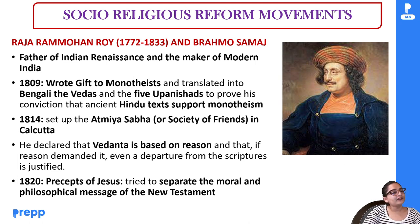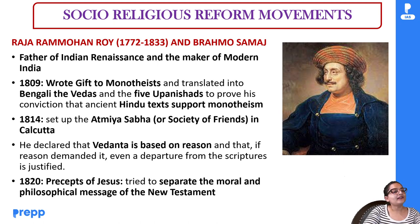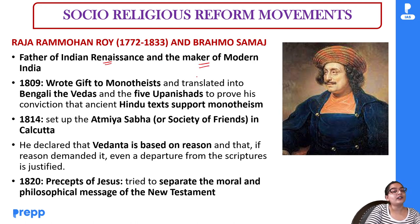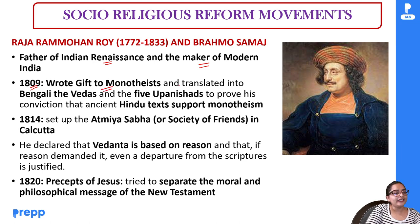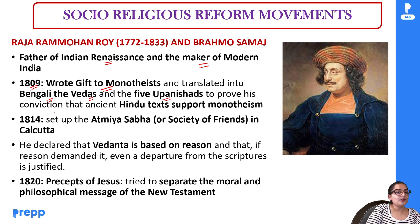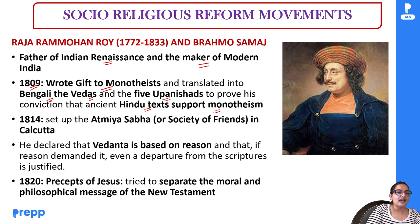Now we start with independent social and religious reformers. The most popular is Raja Ram Mohan Roy, who started the Brahmo Samaj. He is called the Father of Indian Renaissance and the Maker of Modern India. In 1809, he wrote 'Gift to Monotheists' and translated the Vedas and five Upanishads into Bengali, to demonstrate that ancient Hindu texts believed in monotheism — one God — which outsiders might miss seeing Hinduism as polytheistic given its large pantheon.